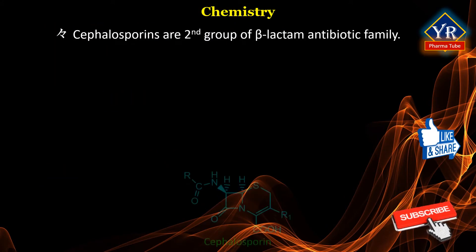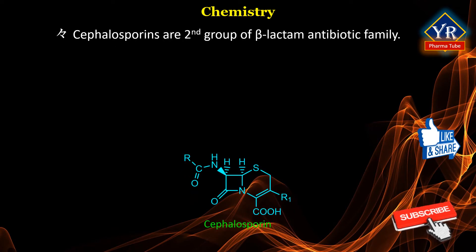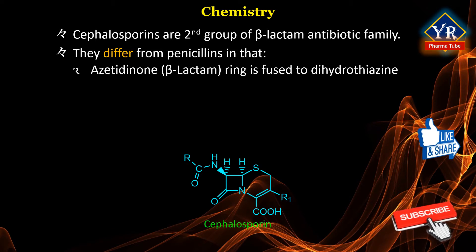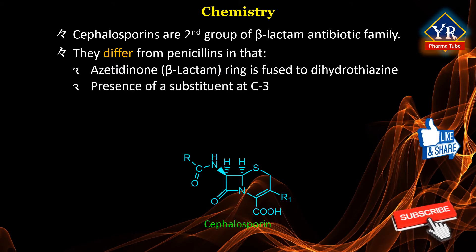Cephalosporins are the second group of beta-lactam antibiotic family to be discovered after penicillins. Cephalosporins are also known as extended spectrum beta-lactams. They differ from penicillins by having the acetidinone ring — that is, the four-membered beta-lactam ring — fused to a dihydrothiazine ring rather than a thiazolidine ring.